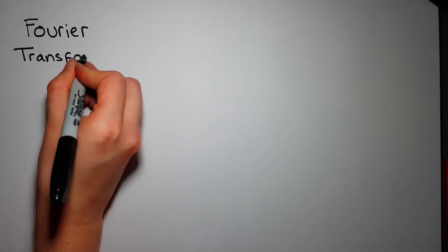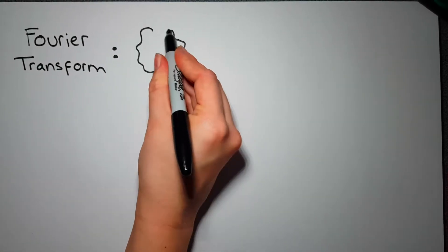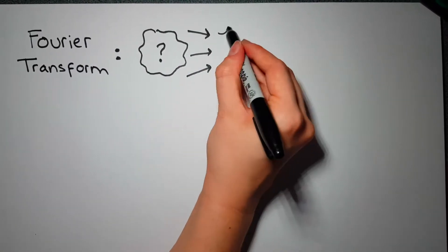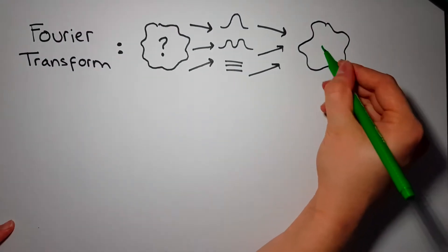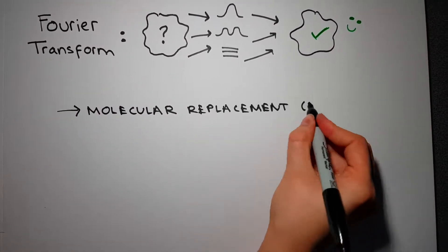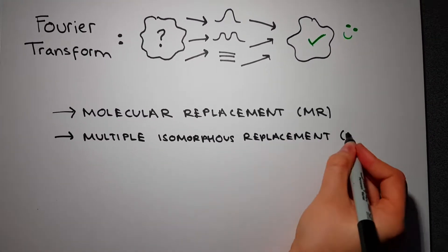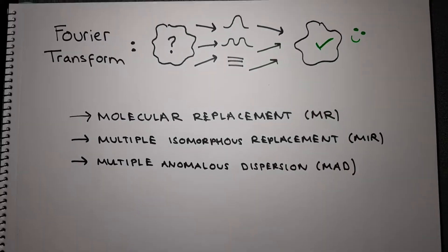The Fourier transform breaks up the wave representing an unknown protein structure into its constituents. Using Fourier summation, these constituent parts can be brought together to reveal the structure. To overcome this phase problem, various techniques have been developed to estimate the phase and carry out the Fourier transform.